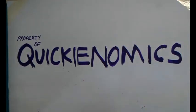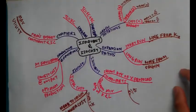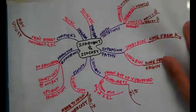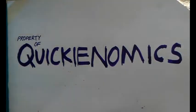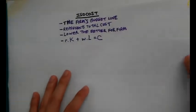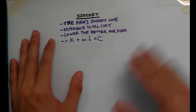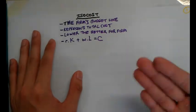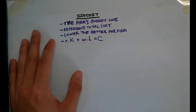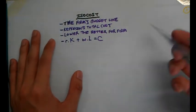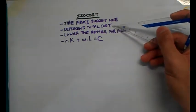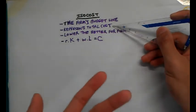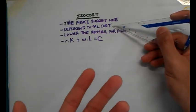They may be similar but there are slight differences. Make sure you get a copy of the mind map. We will first start with the definition of the Isocost. We already know that it is the firm's budget line, and what it tells us is the firm's total cost. By looking at the budget line, we know how much the firm has spent on both capital and labour to produce a certain quantity of goods.